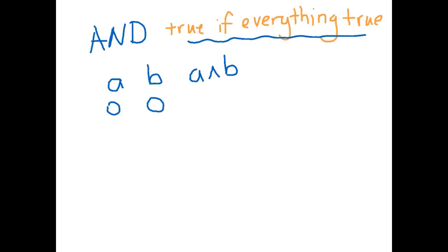So because they're not all true, it has to be false. Let's say we had a was false and b was true. Still not everything is true. So it has to be false.